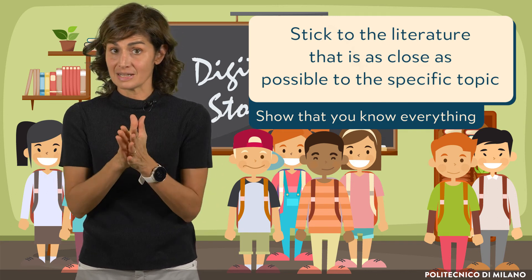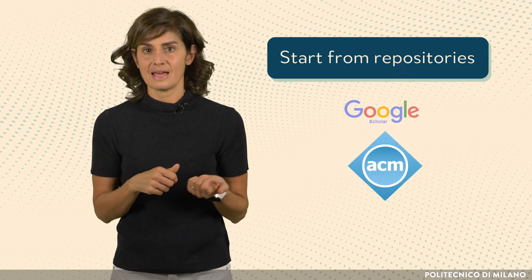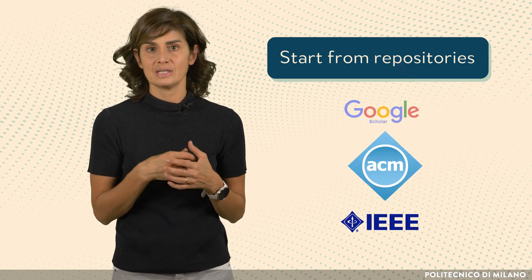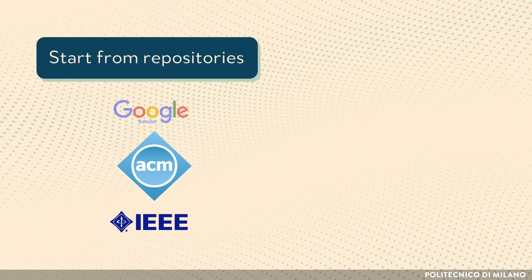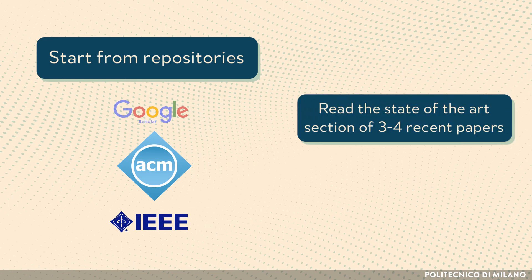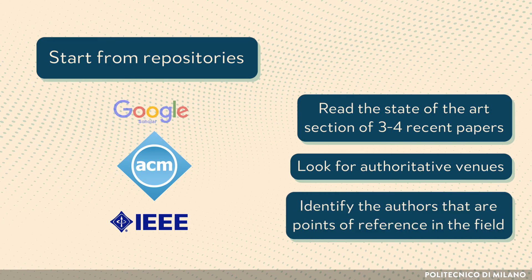Remember the blade of grass and the baobab. Now, two practical pieces of advice. Advice number 1: when you investigate the state of the art of a new field, start from repositories like Google Scholar, ACM Digital Library, or IEEE Digital Library, looking for quite recent papers on the topic you are interested in. Read the state of the art section of 3–4 recent papers. If they come from authoritative venues, they should be well done, and you should be able to identify the key authors in the field since they will be quoted by most.